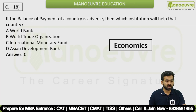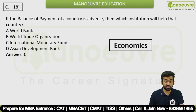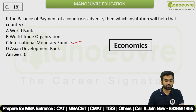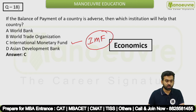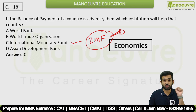Question 18: If the balance of payments of a country is adverse, which institution will help that country? The answer is the International Monetary Fund — IMF. Related questions may also ask about the IMF's headquarters.